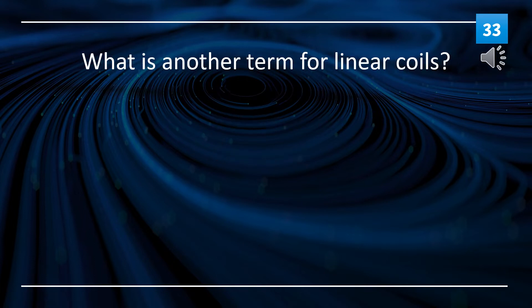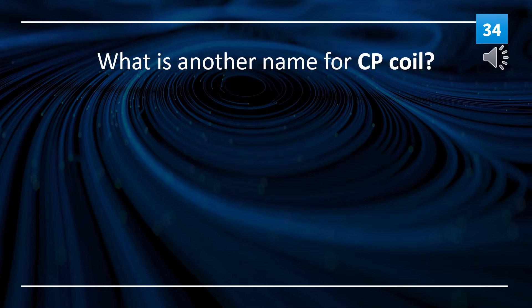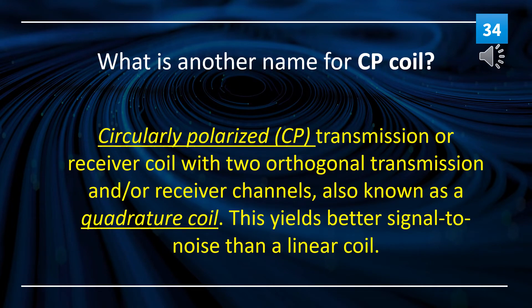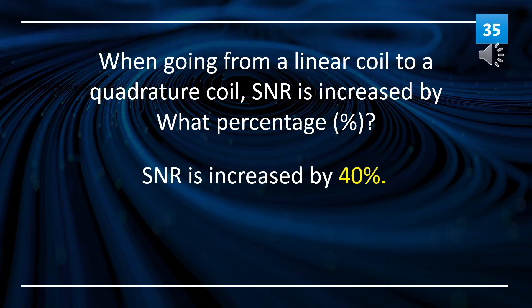What is another term for linear coils? Linear coils are surface coils. What is another name for CP coil? Circularly polarized (CP) transmission or receiver coil with two orthogonal transmission and/or receiver channels is also known as a quadrature coil. This yields better signal to noise than a linear coil. When going from a linear coil to a quadrature coil, SNR is increased by 40%.